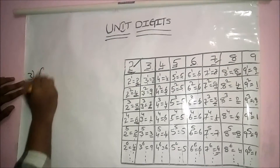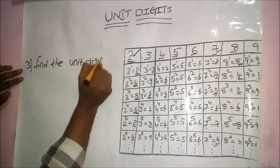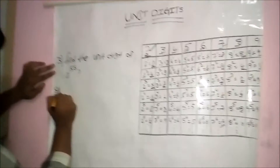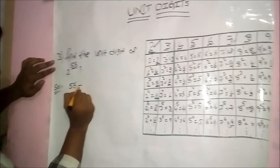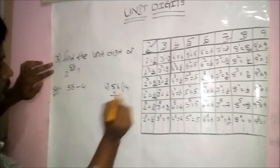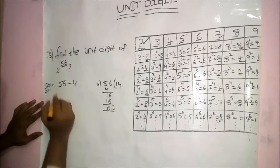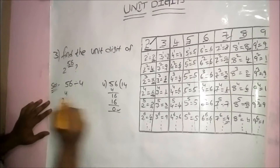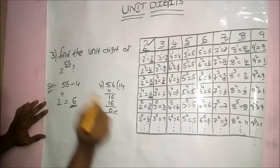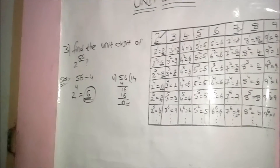Find the unit digit of 2 power 56. Divide 56 by 4: remainder is 0. In case the remainder is 0, replace the power with 4. So 2 power 4 — according to the table — is 6. In this type of problem, if the remainder is 0, the answer is always 6.